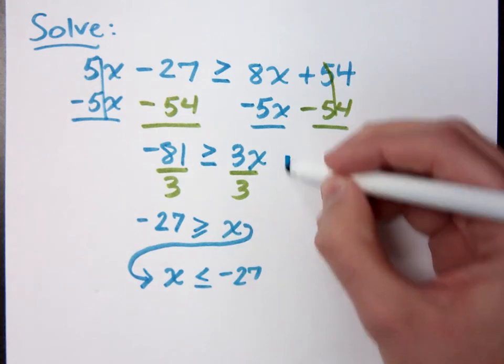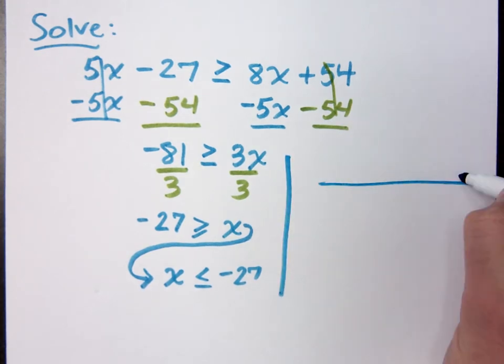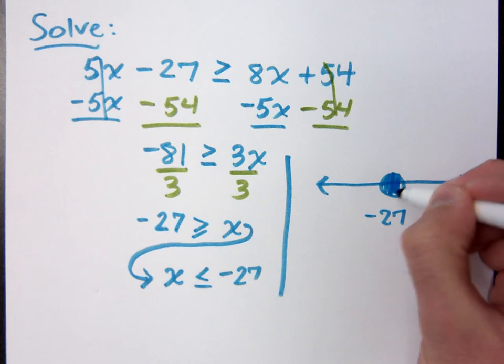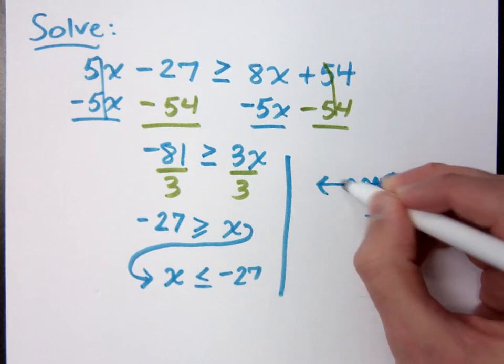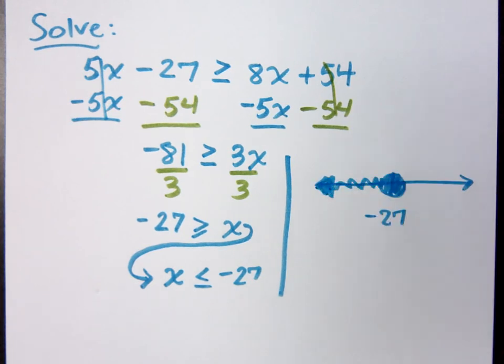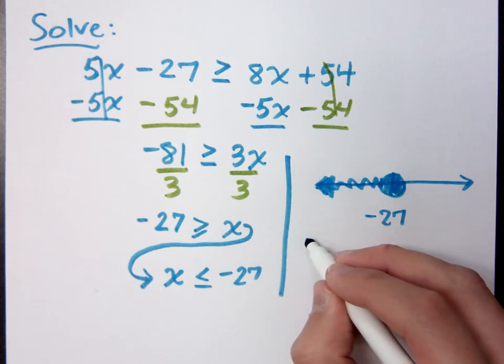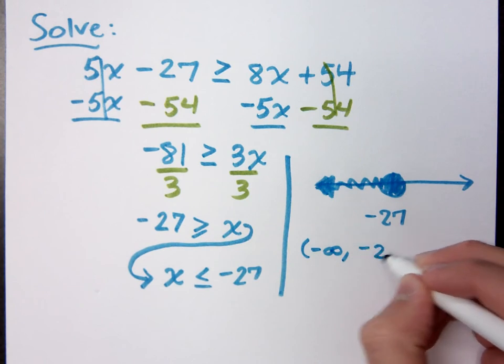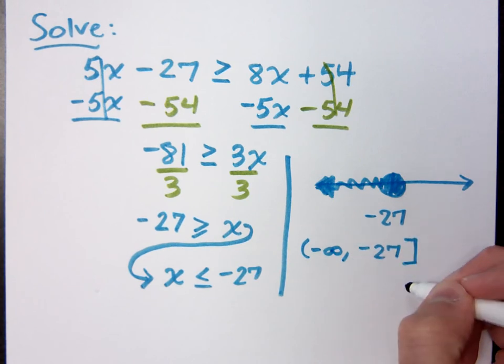So negative 27 is greater than x, but backwards means what? X is less than negative 27, right? So if I were to graph this, what's my number line? What does that look like? It's a closed circle at negative 27 going which direction? To the left. What is the interval notation for that? Coming from negative infinity to negative 27 with a bracket. Do you all agree?